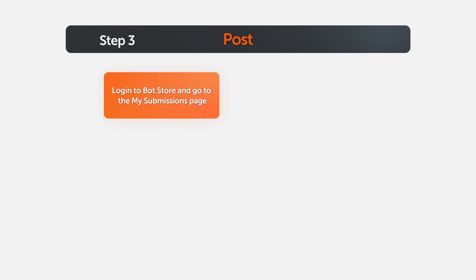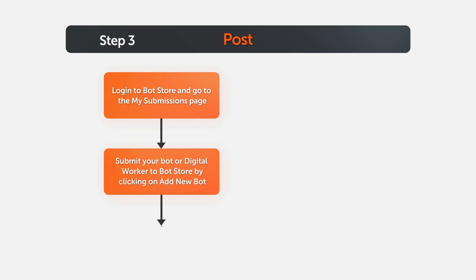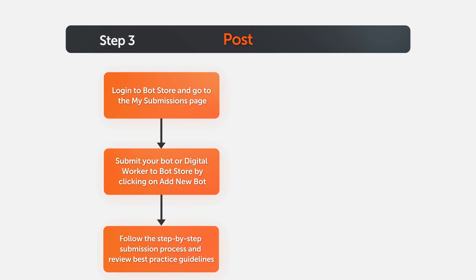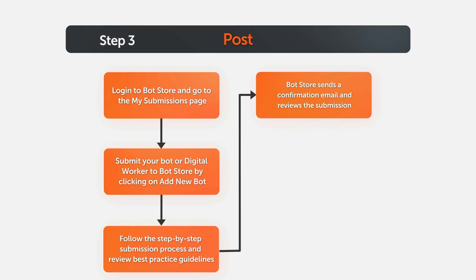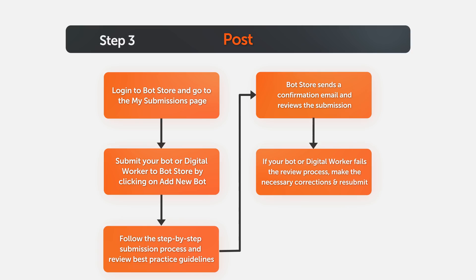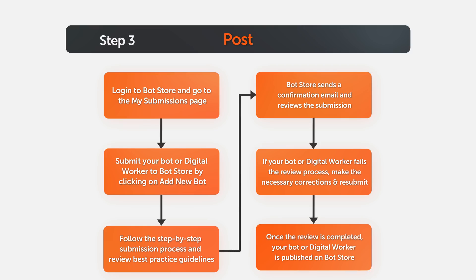Review the zipped package to ensure that all files have been generated correctly. You have completed step two and successfully built and packaged your bot or digital worker. The third and final step is to submit your bot or digital worker to BotStore in order to publish it. Log into BotStore and go to the My Submissions page. Add a new bot and follow the step-by-step submission process. Review the best practice guidelines to make sure your bot or digital worker passes the review process. Once you submit, BotStore sends you a confirmation email and reviews your submission. If it fails the review process, BotStore sends you an email with the list of corrections to be made. Resubmit your bot with the necessary modifications. Once the review is completed successfully, your bot or digital worker is published on the BotStore.